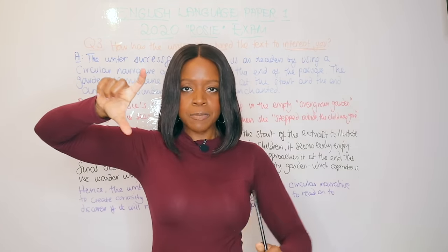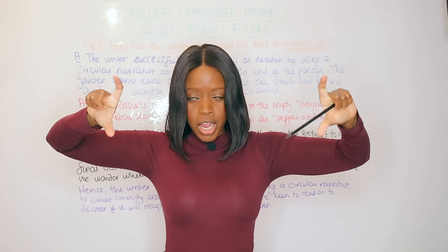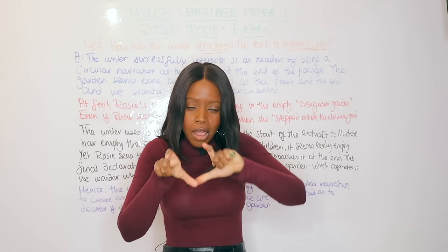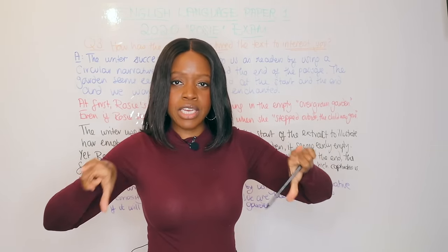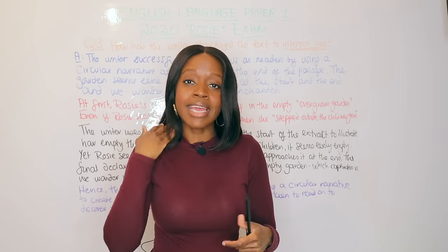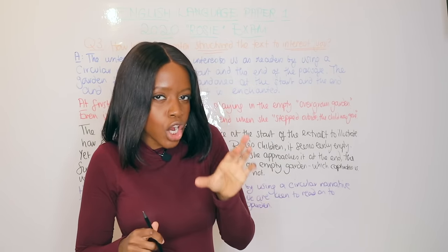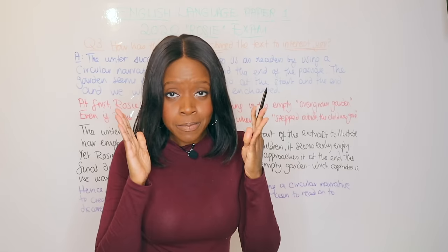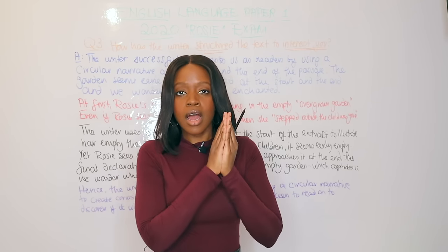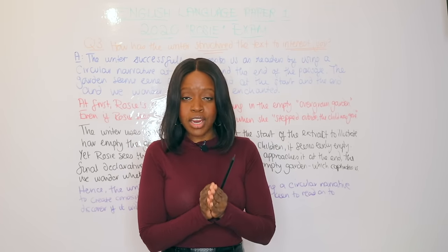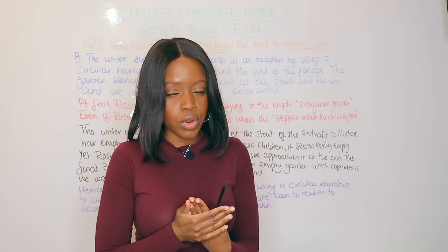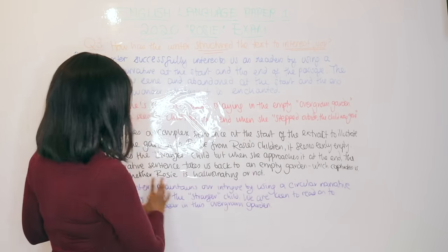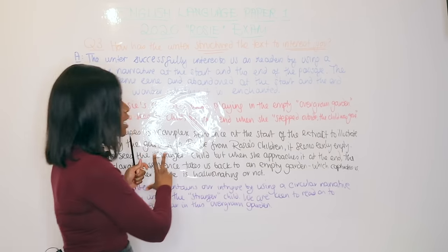In my explanation, the first two sentences discuss how the opening is empty and how the writer uses a complex sentence to emphasize this. Then I juxtapose it with the end — the declarative sentence shows it also ends in an empty garden, even though in the middle there's a stranger child. If you're not sure what structural techniques there are, check out the language and structural techniques video — it covers complex sentences, declarative sentences, and more.